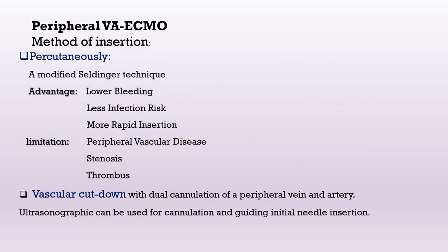The first type of VA ECMO is peripheral VA ECMO. It has two types of insertion: percutaneous or through vascular cutdown. Percutaneous can be done through the modified Seldinger technique, and the advantages of this technique are lower bleeding, less risk of infection, and more rapid insertion.